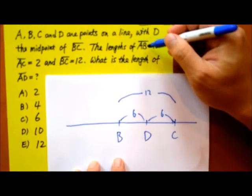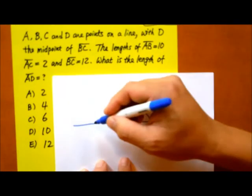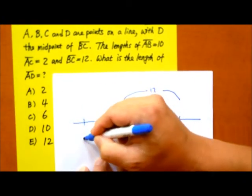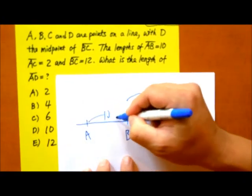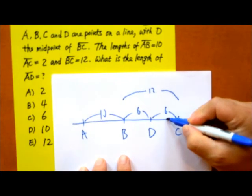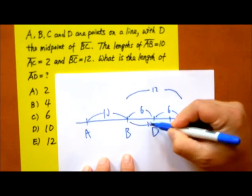Now the length of AB is 10, so A can be on either side of B. It can be here with this being 10, or it can be here with this being 10.